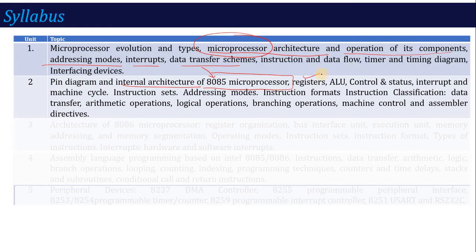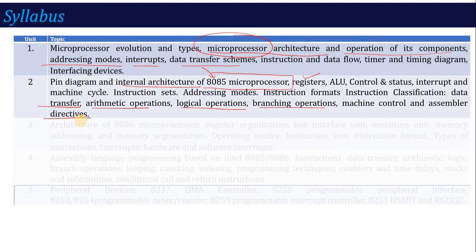Within the 8085 unit, you will study the internal architecture including register structure, control unit, and ALU structure. You will also study the different types of interrupts available, the various signals shown in the pin diagram, timing diagrams, instruction completion, and the different types of instructions: data transfer group, arithmetic group, logical instructions, branching operations, machine control, and assembler directives.